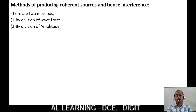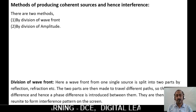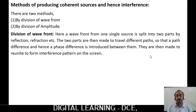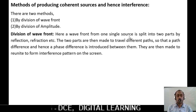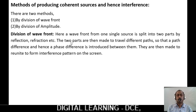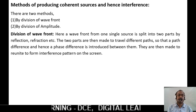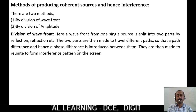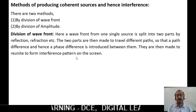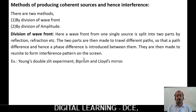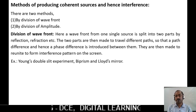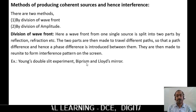Let us see the methods of producing coherent sources and hence interference. There are two methods. First, by division of wavefront: a wavefront from a single source is split into two parts by reflection or refraction. The two parts travel different paths so that a path difference and hence a phase difference is introduced between them. They are then made to reunite to form an interference pattern on the screen. Examples include Young's double slit experiment, Fresnel's biprism, and Lloyd's mirror.